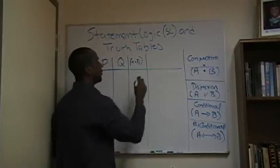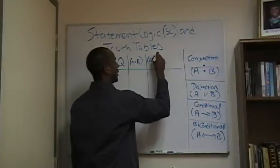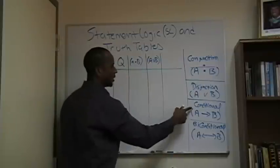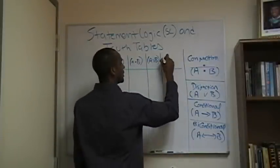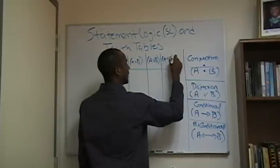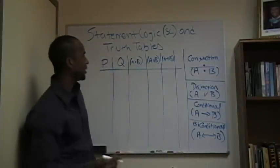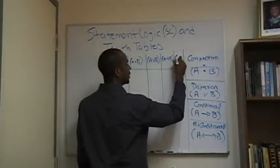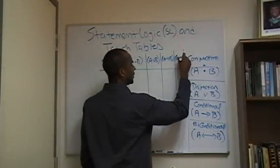I want to do it for the disjunction, which is A or B. I want to do it for the conditional - I'm going to run out of space - which is A then B. And lastly, I'm running out of space, I apologize. Lastly, I want to do it for the biconditional, which is if and only if B.